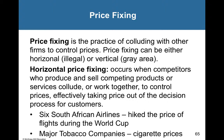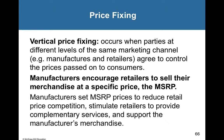We also have price fixing — the practice of colluding with other firms to control prices, either horizontally or vertically. Horizontal price fixing is when competitors producing similar products collude to control prices, taking pricing decisions out of the market for consumers — almost like a monopoly. During the World Cup, six South African airlines got together and hiked up flight prices since they were the only options. Vertical price fixing is where parties at different levels of the same channel — like a manufacturer and retailer — agree to control the prices passed on to consumers.